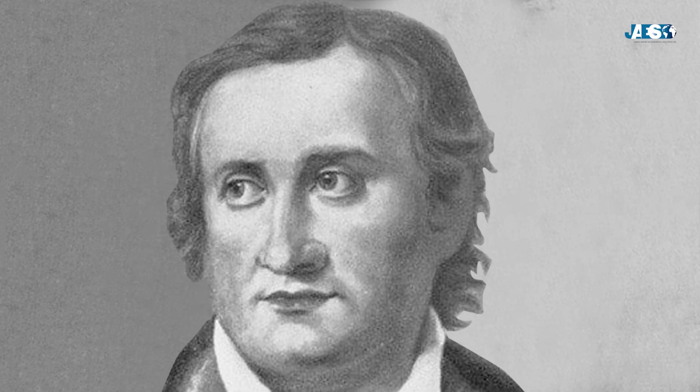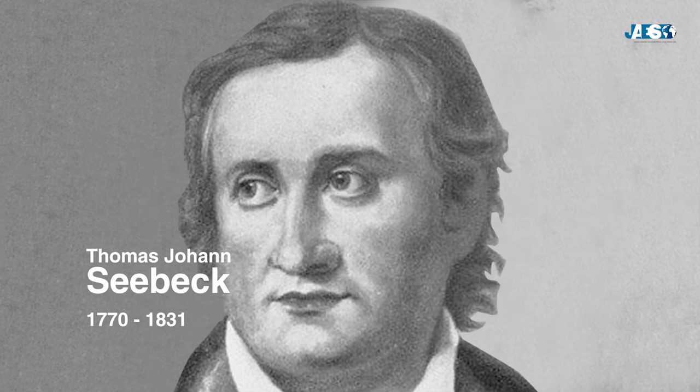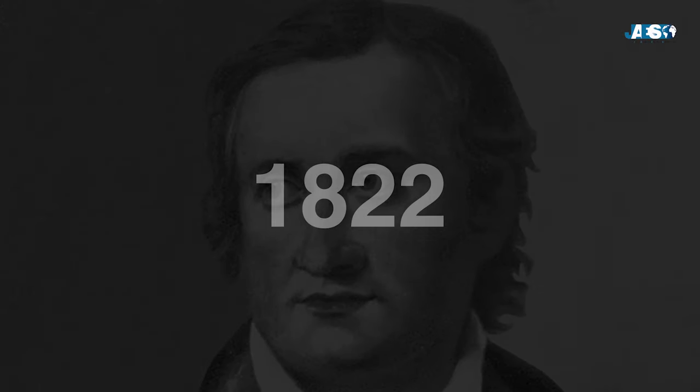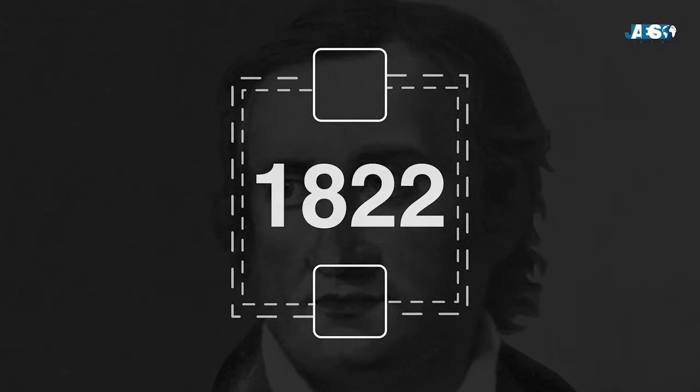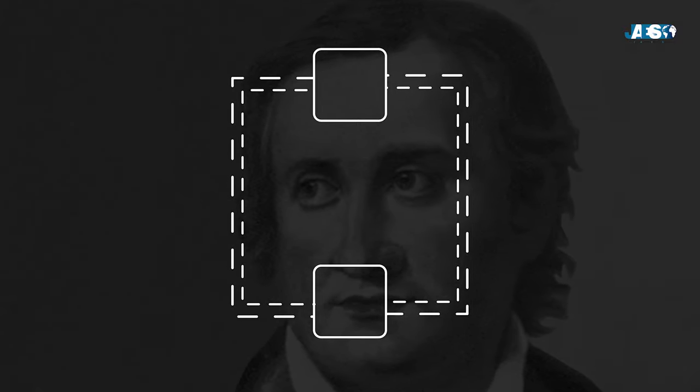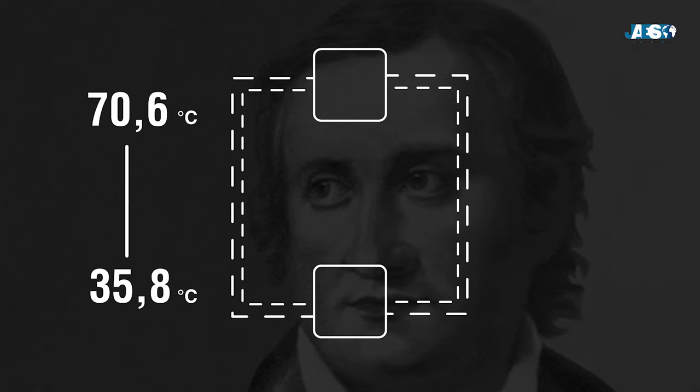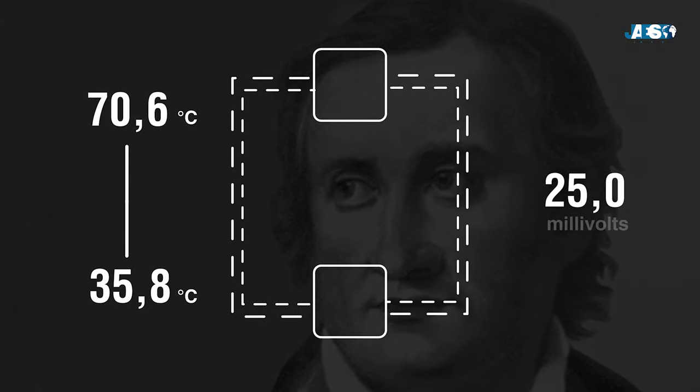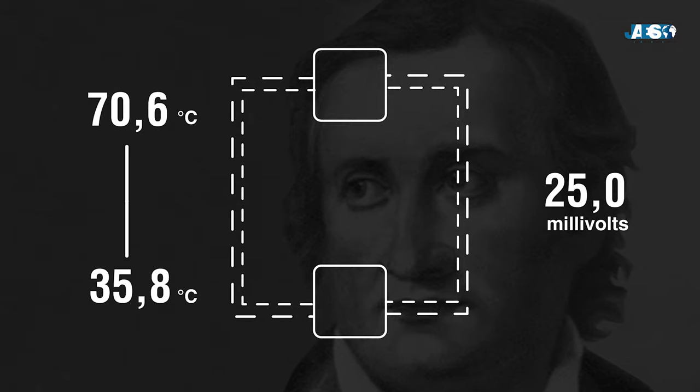The basic principle that uses the thermocouple for its operation was discovered by physicist Thomas Johann Seebeck in 1822. He discovered that in a closed circuit formed by two conductors of different nature and subjected to a temperature gradient, a potential difference is established that is proportional to the temperature differences.